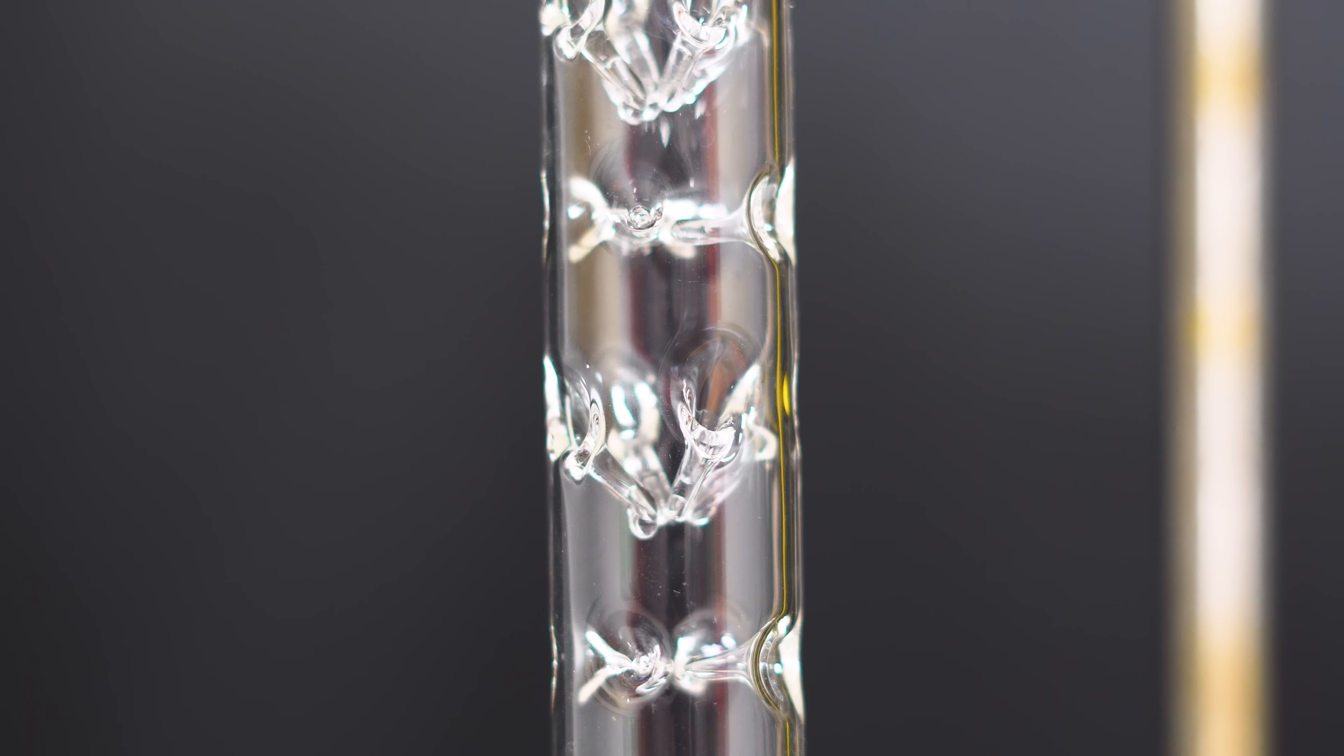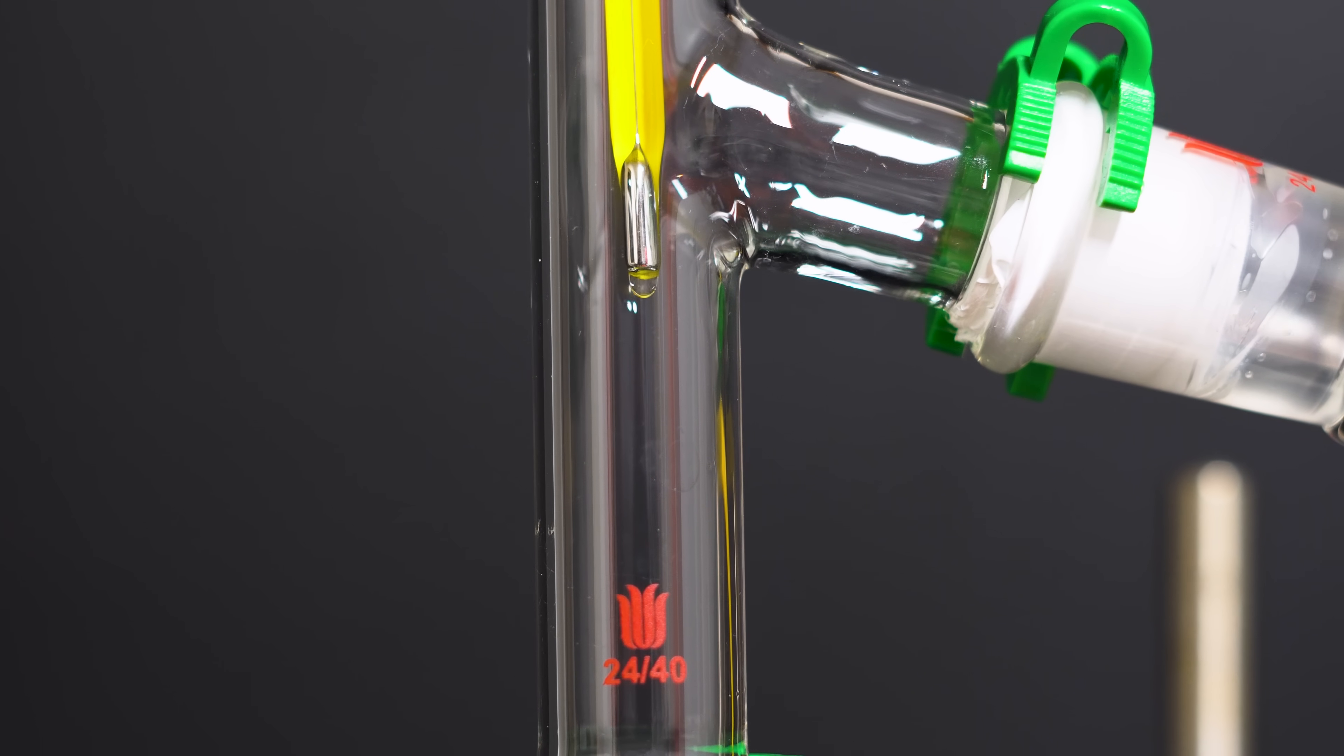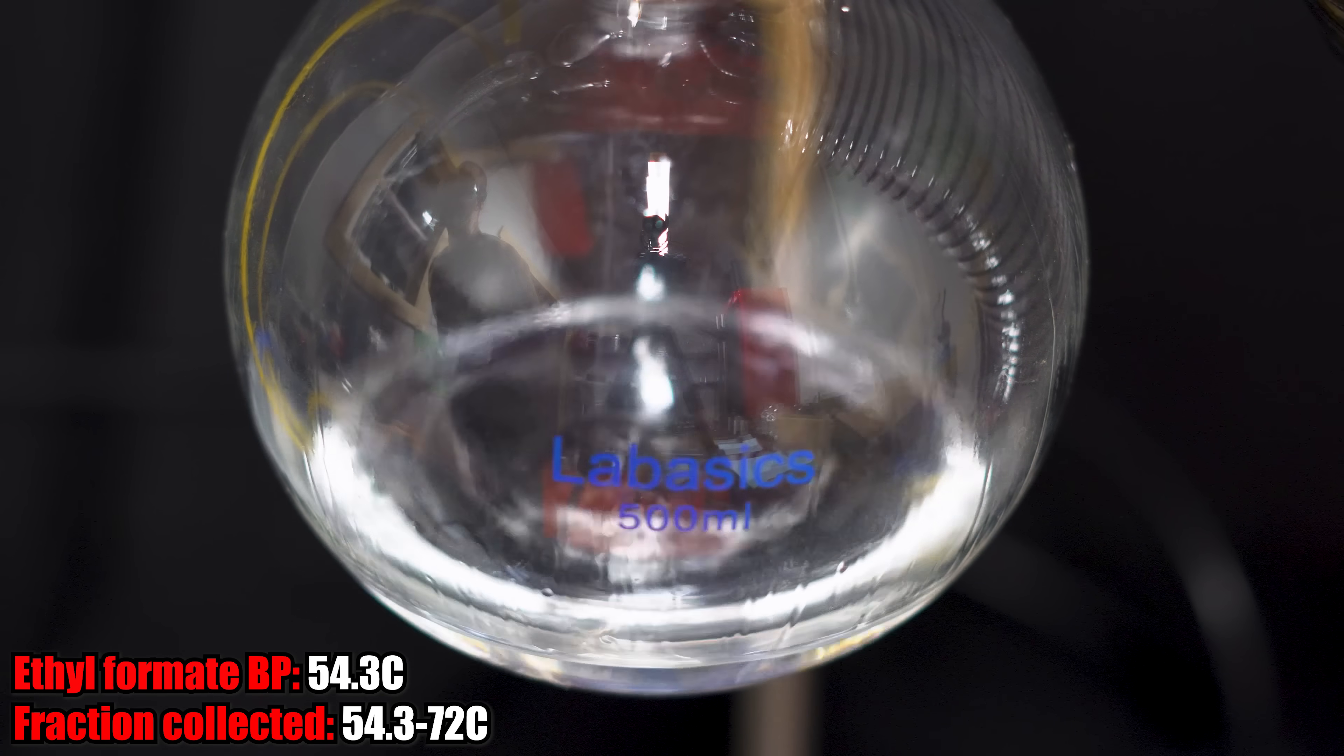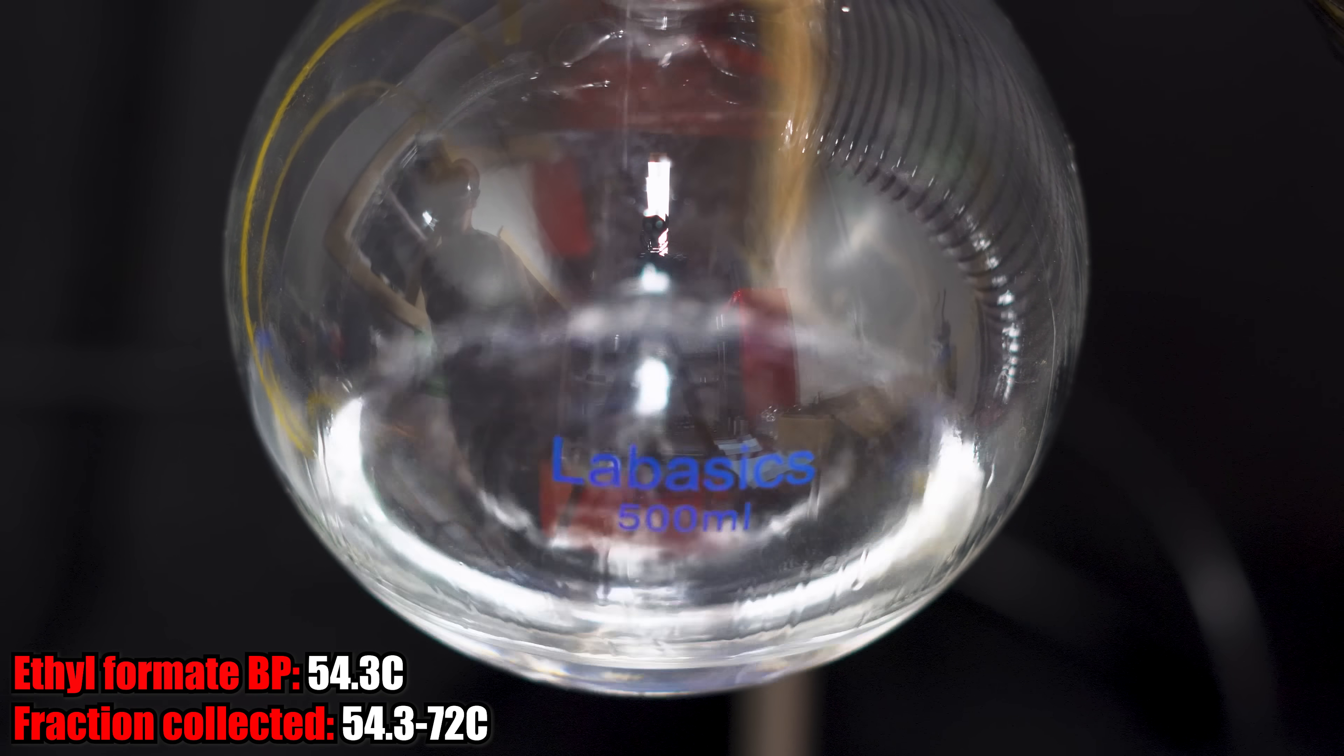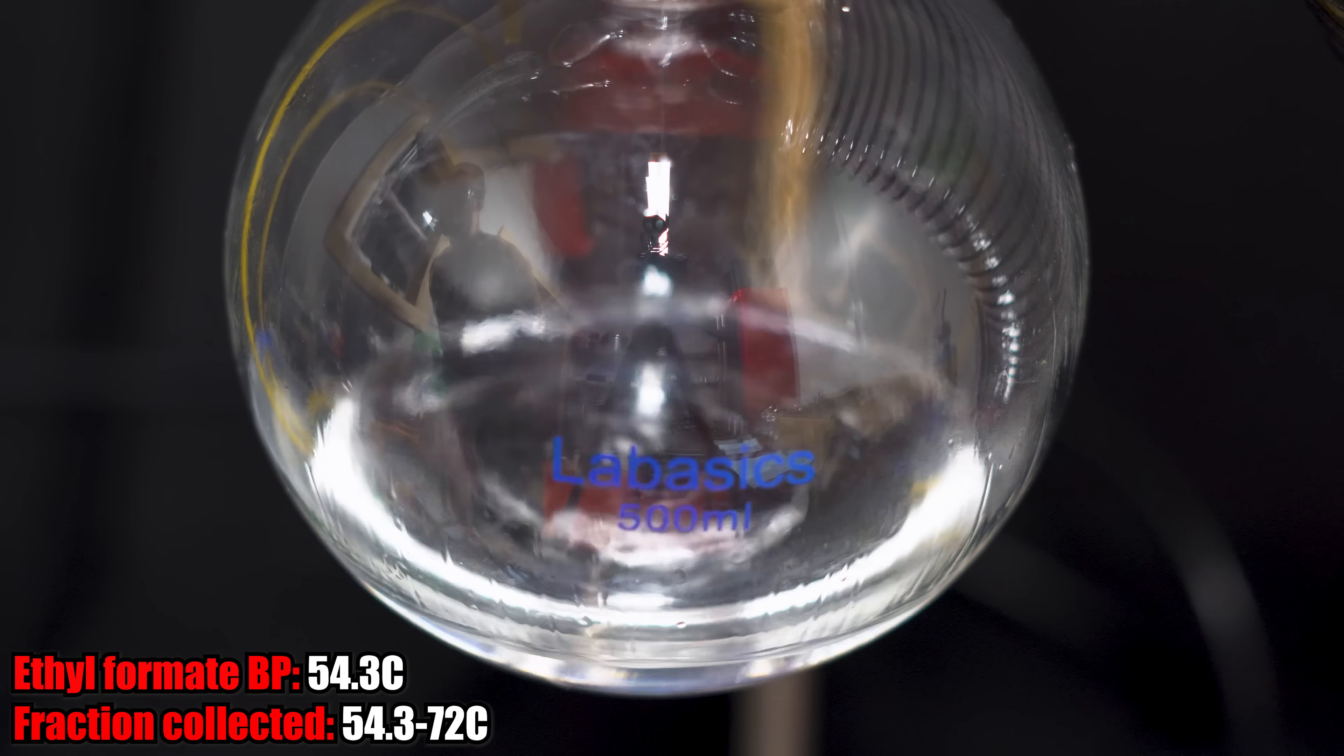Ethyl formate should be coming over first, at a boiling point of 54.3 degrees Celsius. The extra surface area in a fractional distillation column significantly enhances the separation process, leading to more efficient, effective, and pure separation of the components in our solution. The ethyl formate did start coming over at its boiling point, but then the temperature kind of rose to 62-ish degrees Celsius and stayed there for a little bit.